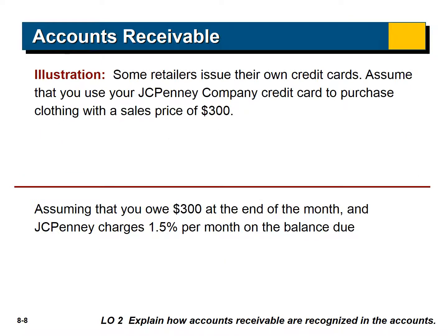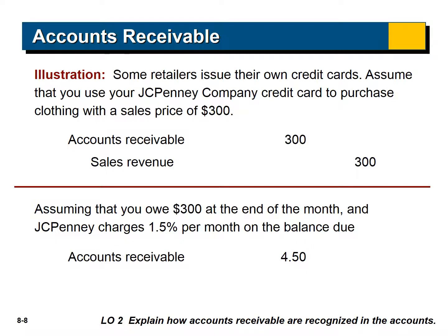Some retailers issue their own credit cards. Assume you use your JCPenney credit card to purchase clothing with a sales price of $300. The journal entry is the same when you record it. If you owe $300 at the end of the month and they charge 1.5% per month on the balance due, when you pay you'll also have the receivable of the $300.